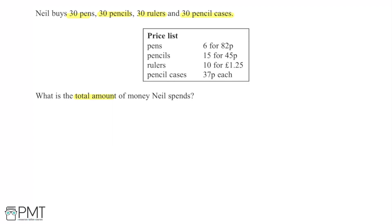So the way that I'm going to go about doing this is by finding the cost of each 30 of each thing and then adding them all together and finding the total cost for all of those.